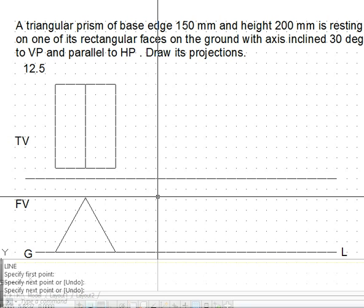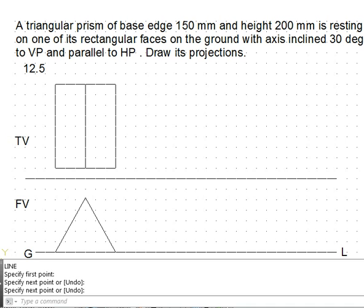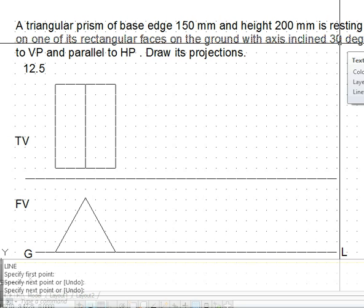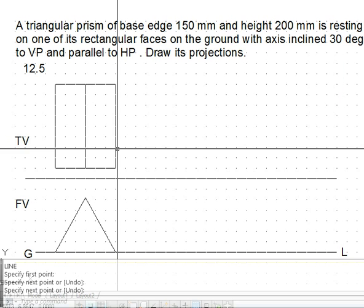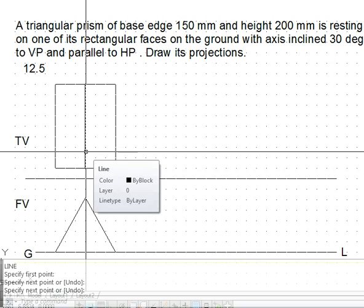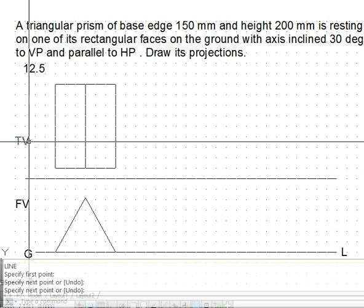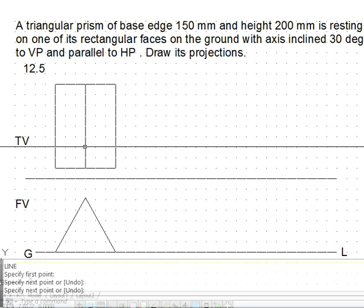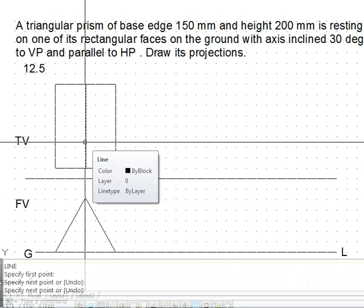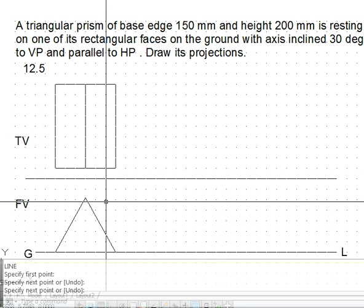Now, to satisfy the second condition — making the axis at 30 degrees to VP — in this current position the axis is making a 90 degree angle to VP. In the top view this line corresponds to the axis and it overlaps with the axis, so here it is making 90 degrees.